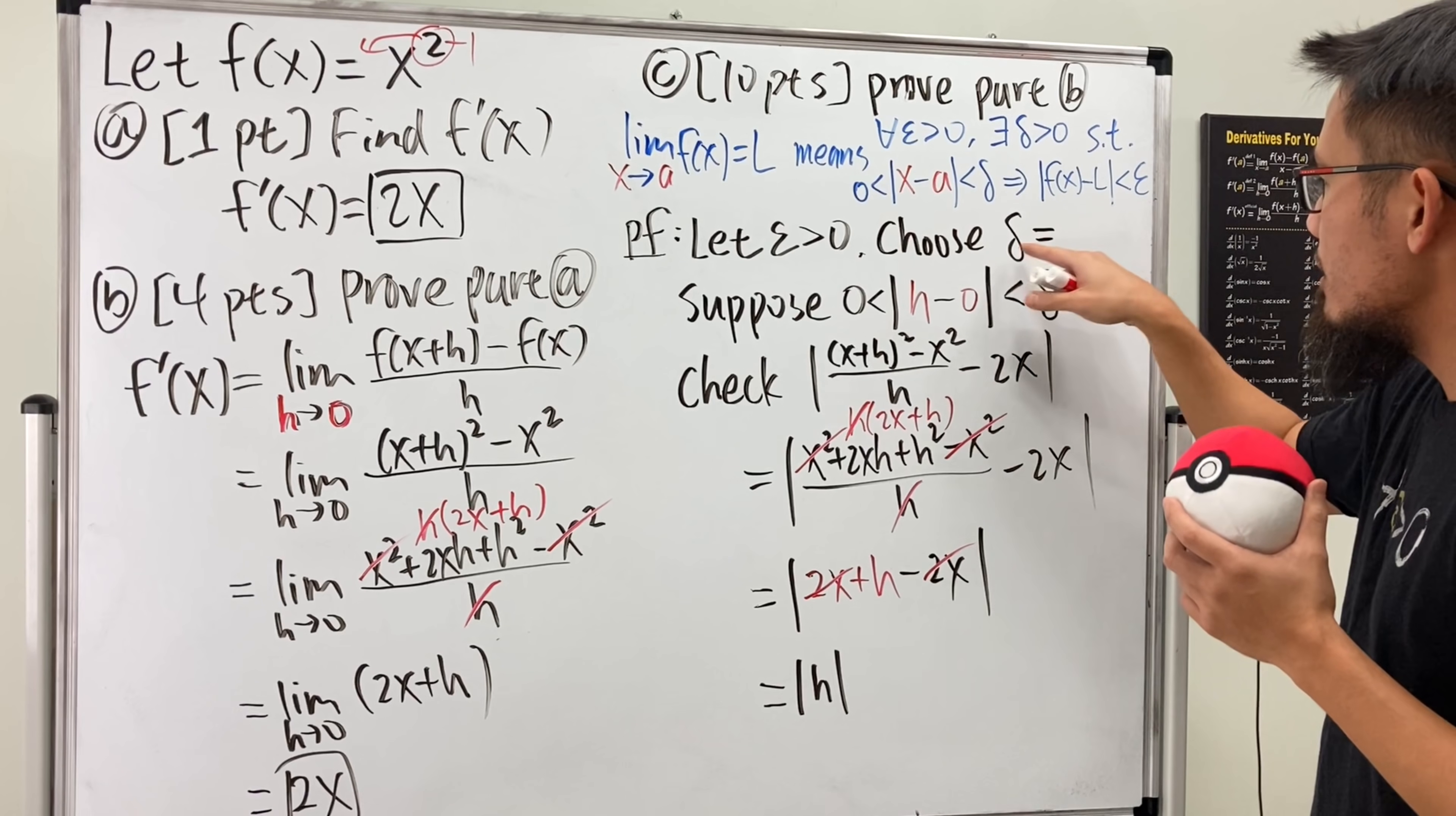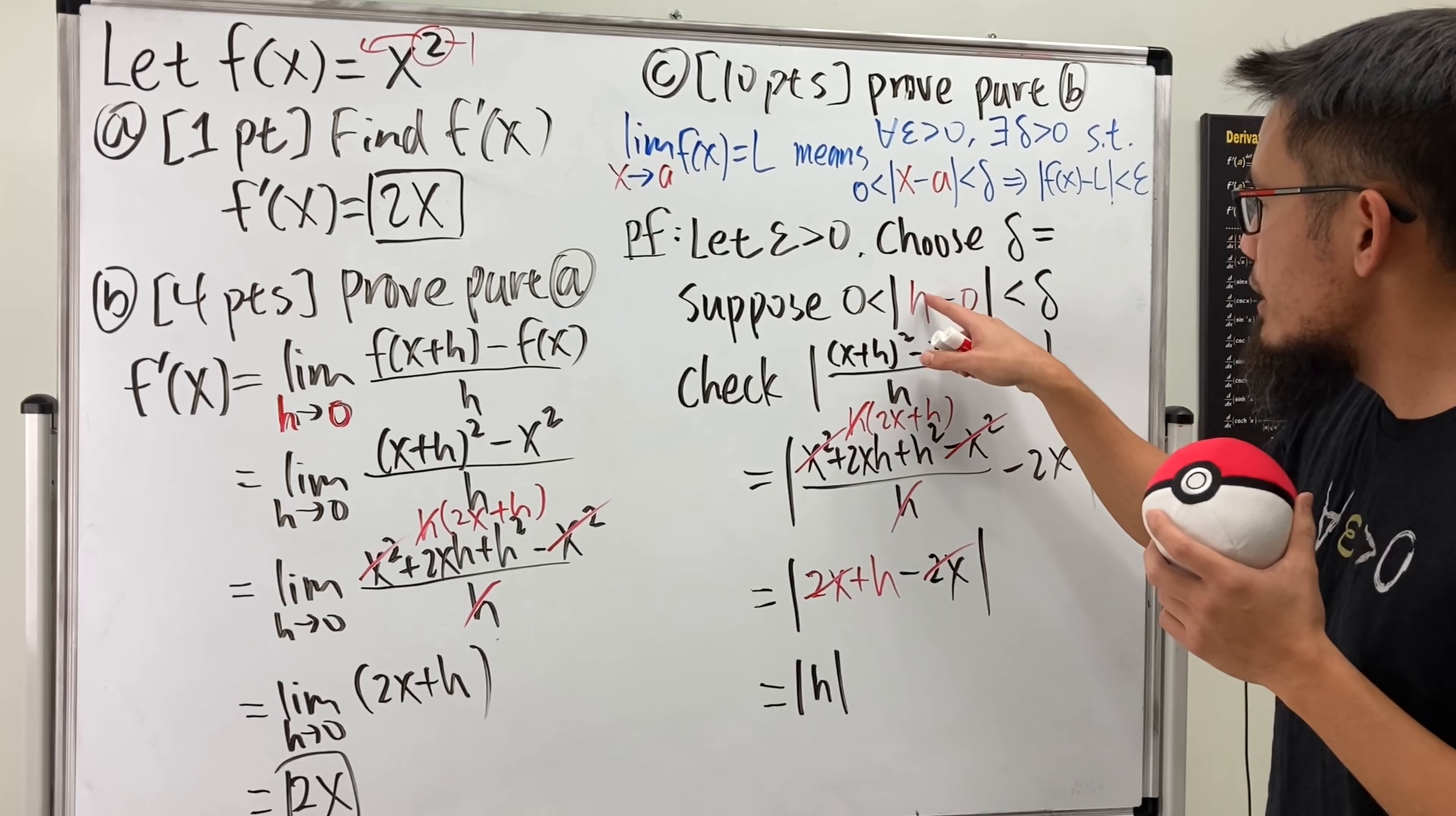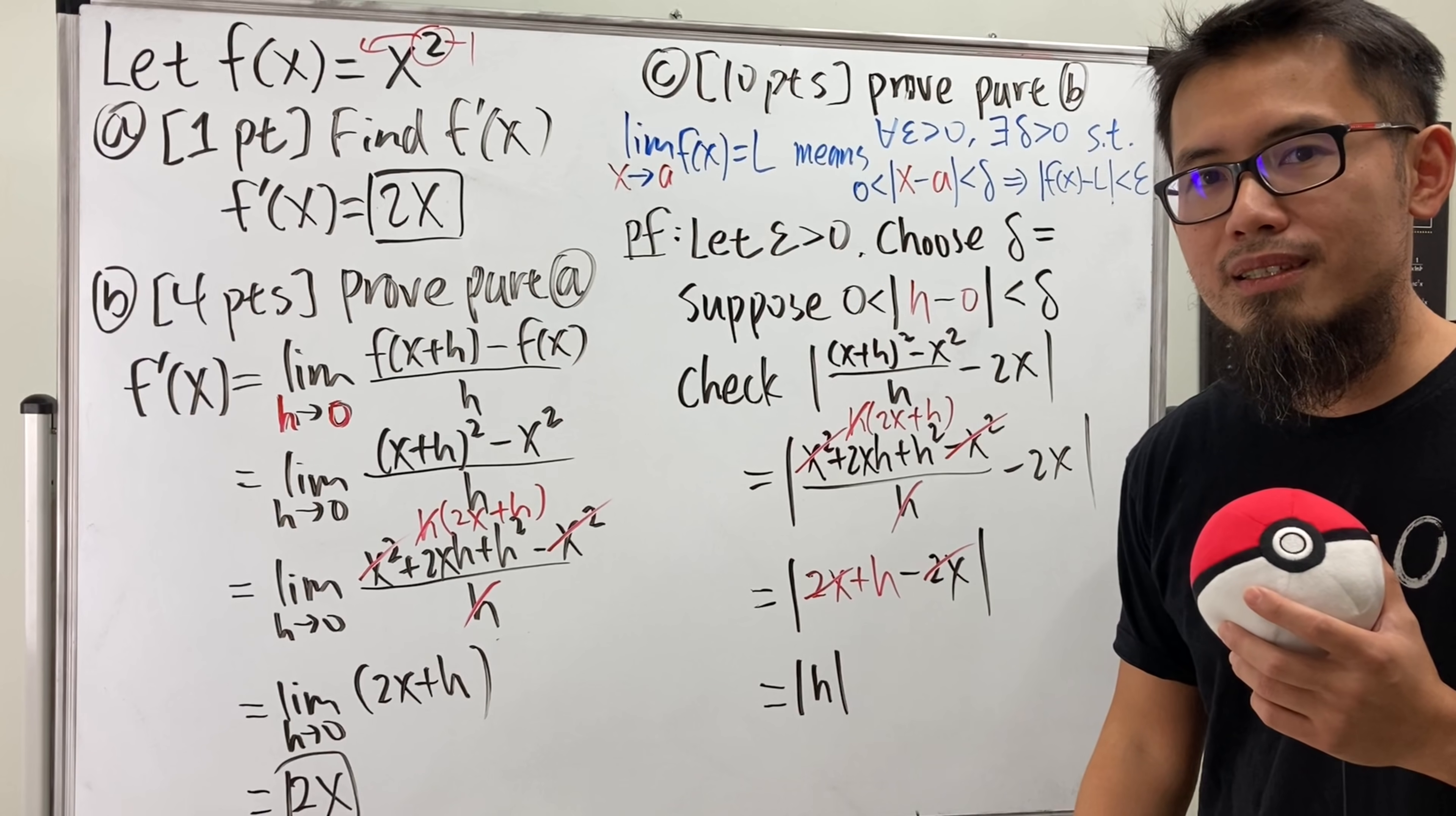Well, we haven't found out what delta is yet. But, you see, in the end, we hope to show that this right here is less than epsilon. We already know that the absolute value of h is less than delta. And wouldn't it be nice if delta is the same as epsilon? Yes.